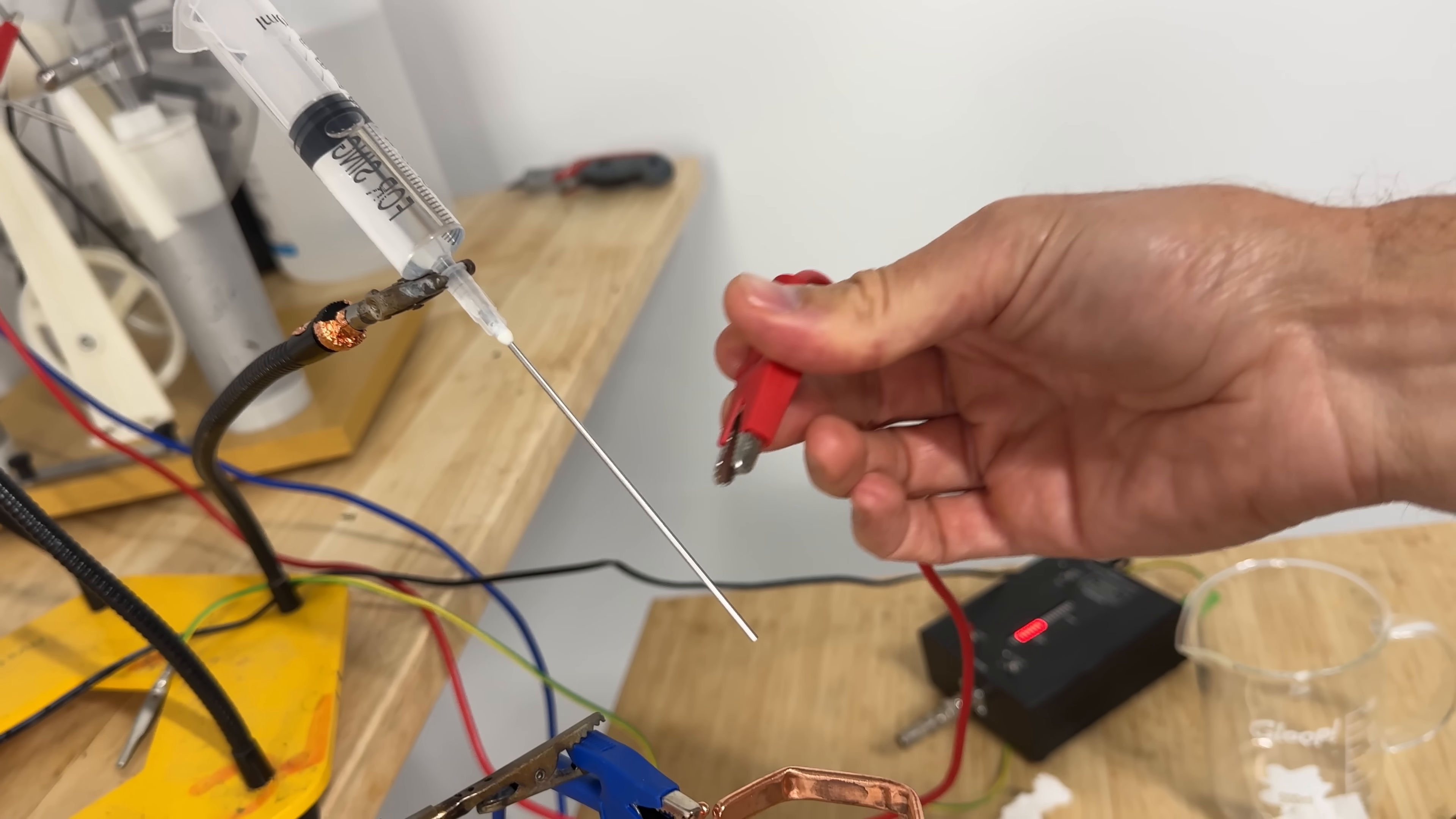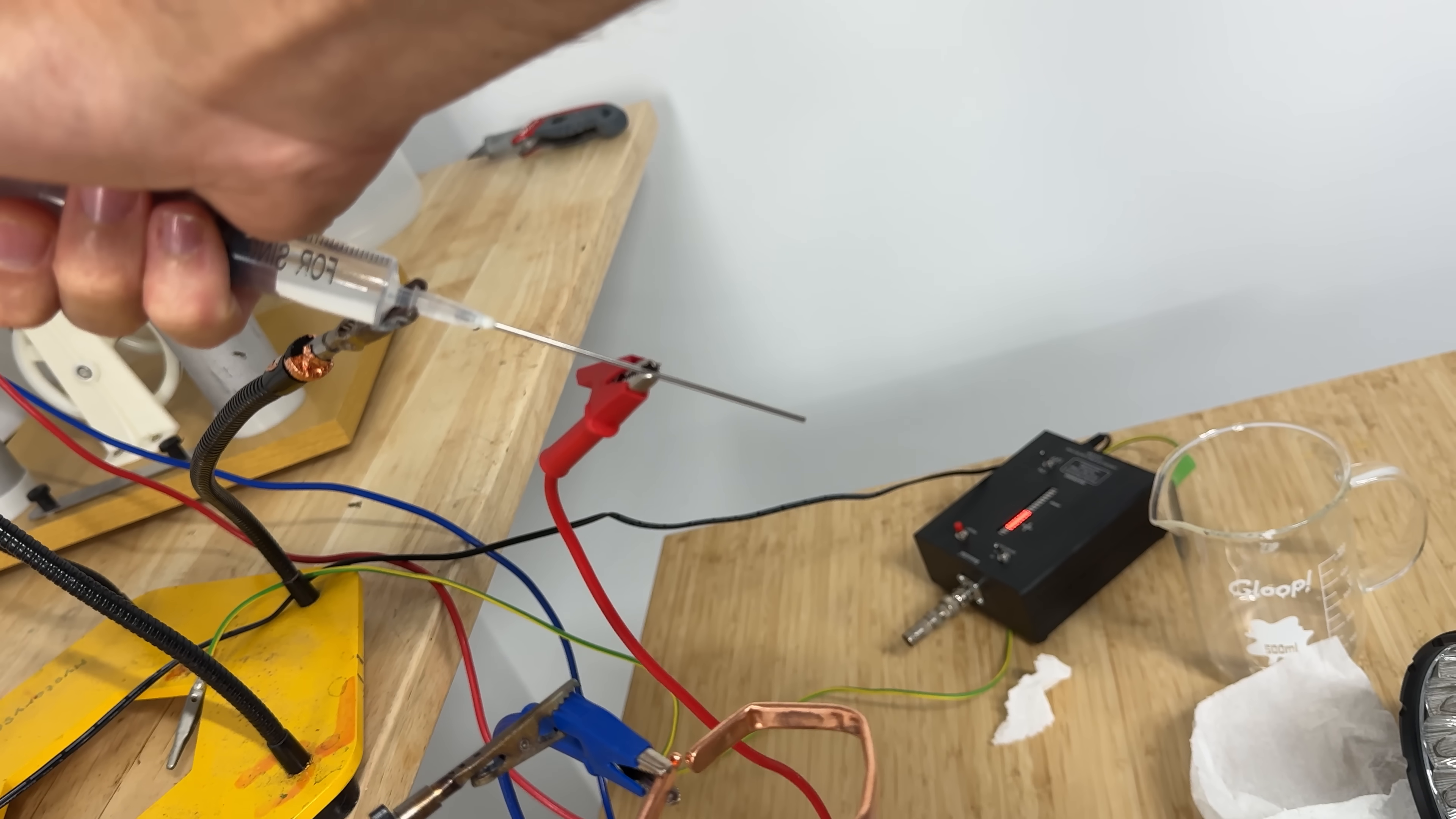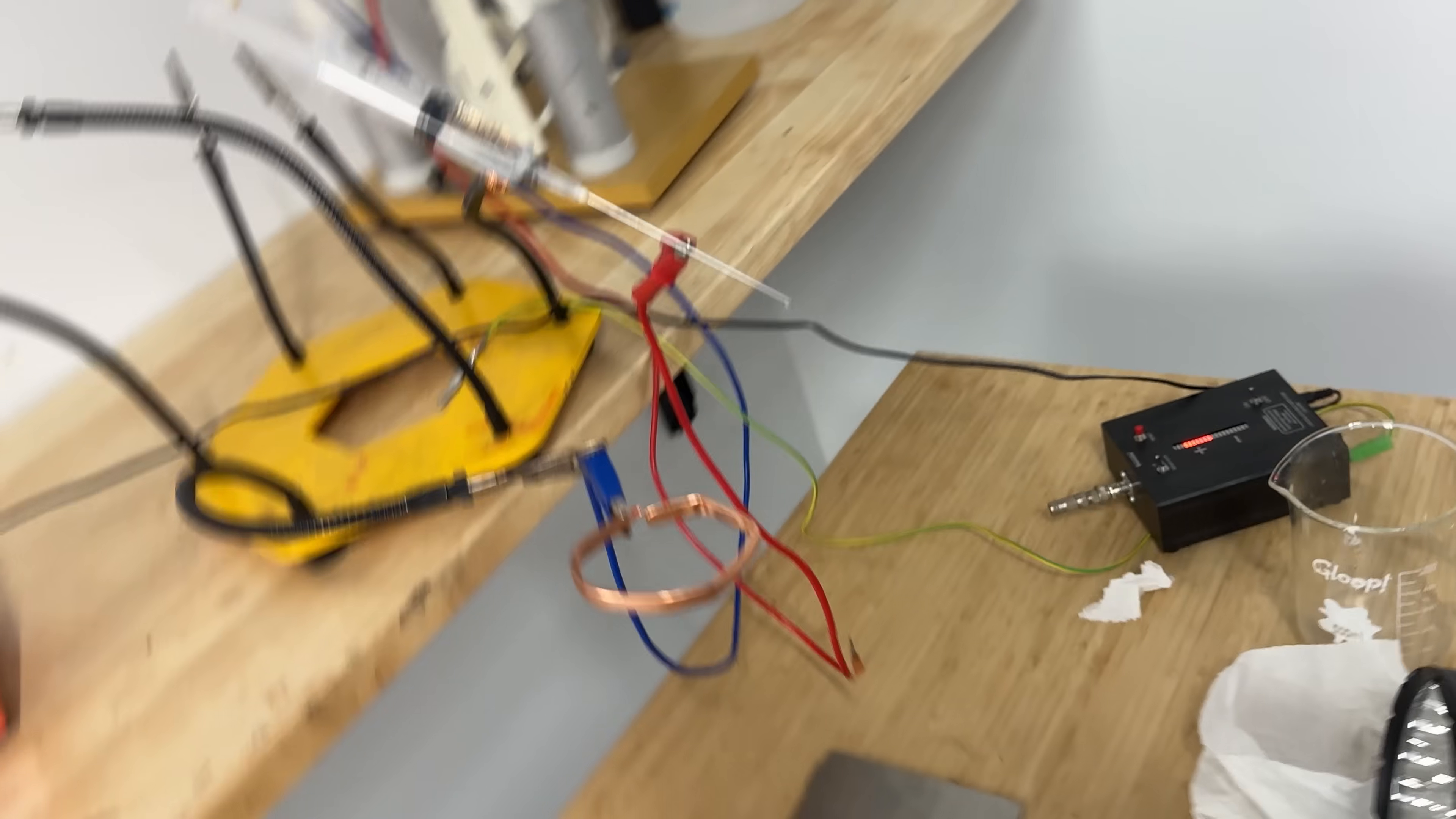But I don't need that much voltage, so I'll just barely turn the crank to keep the voltage lower. Then I'll hook one of these electrodes to a needle that's connected to a syringe full of isopropyl alcohol. This way I can charge the drops as they leave the syringe.